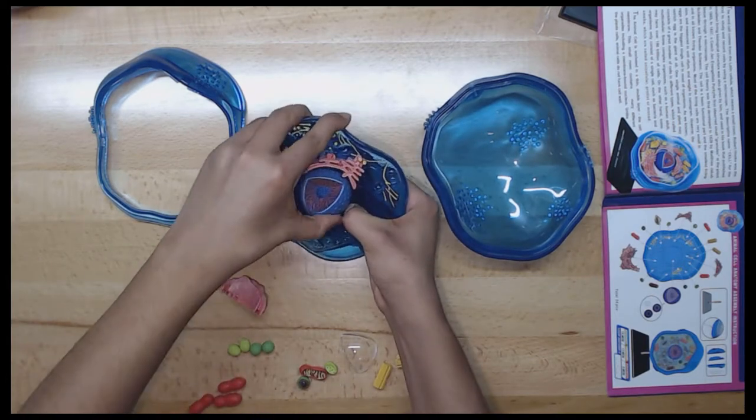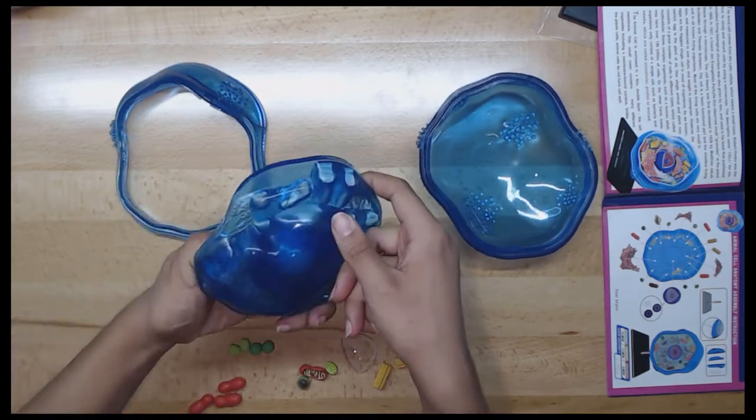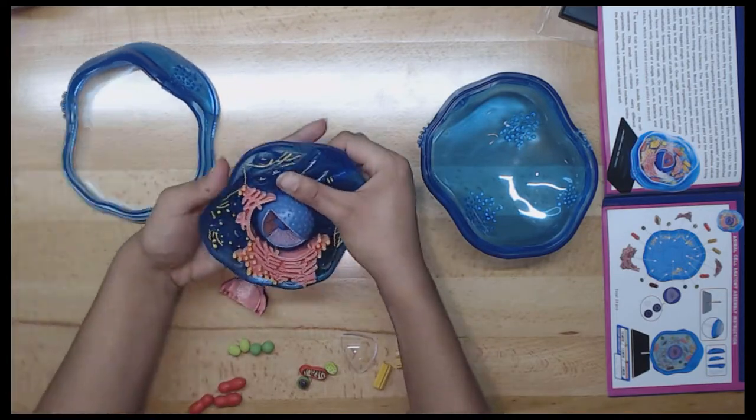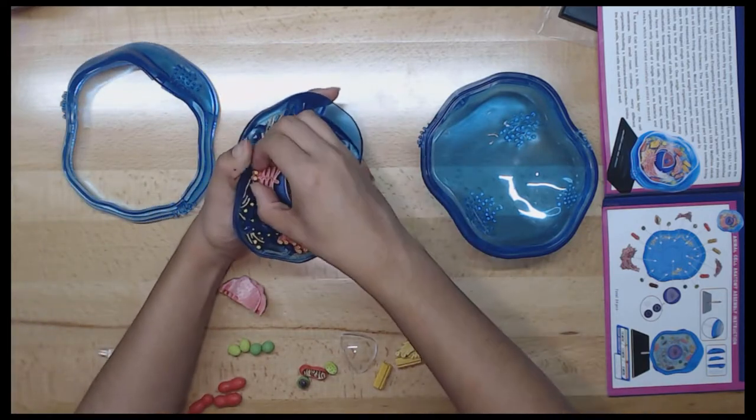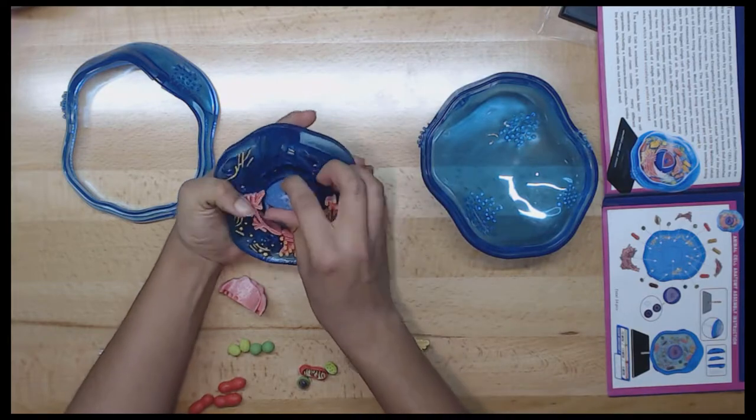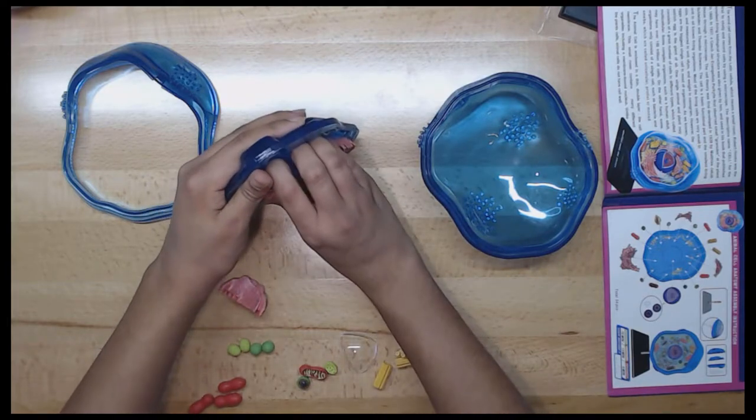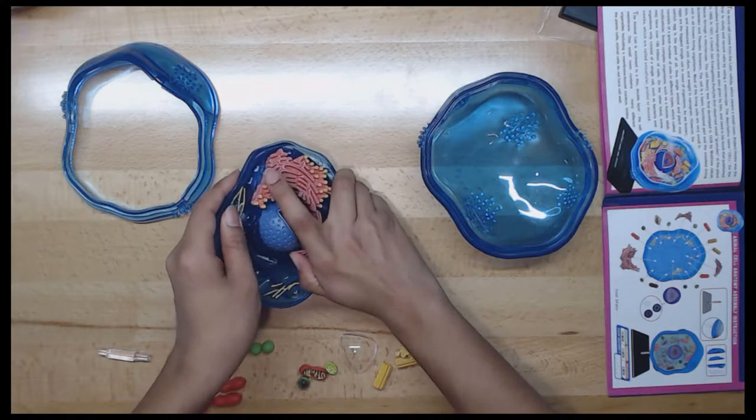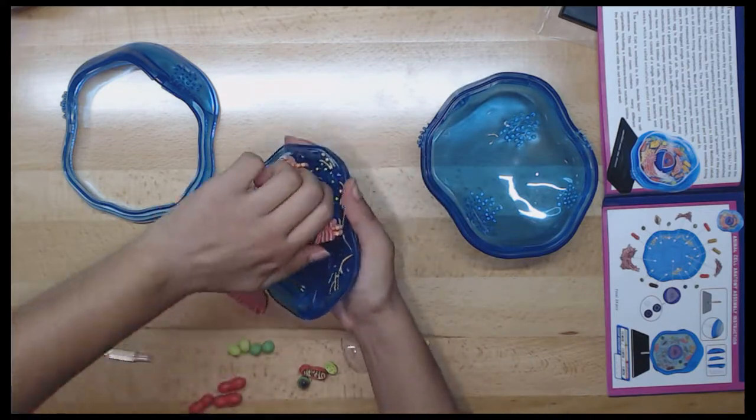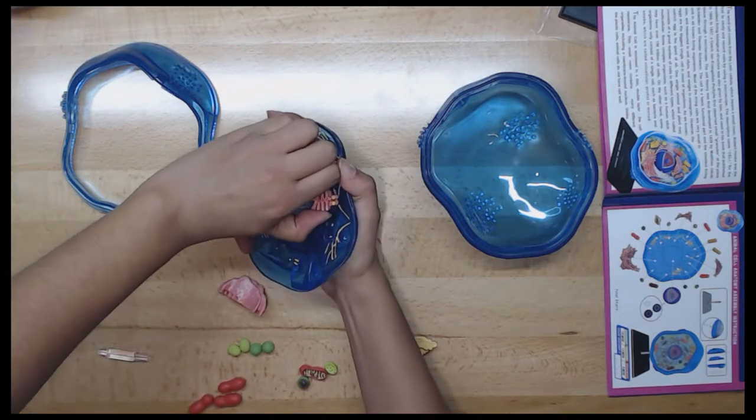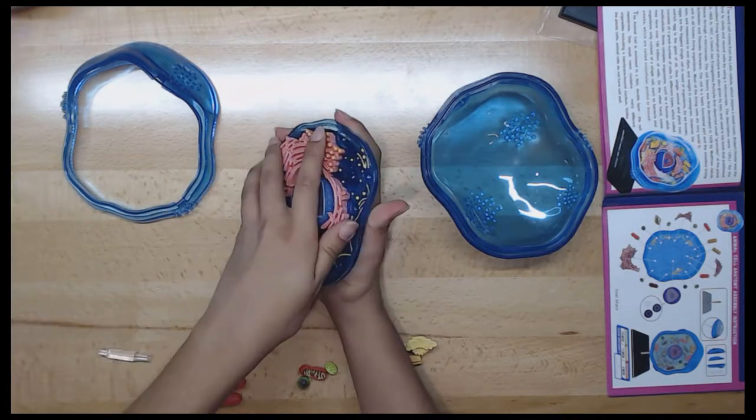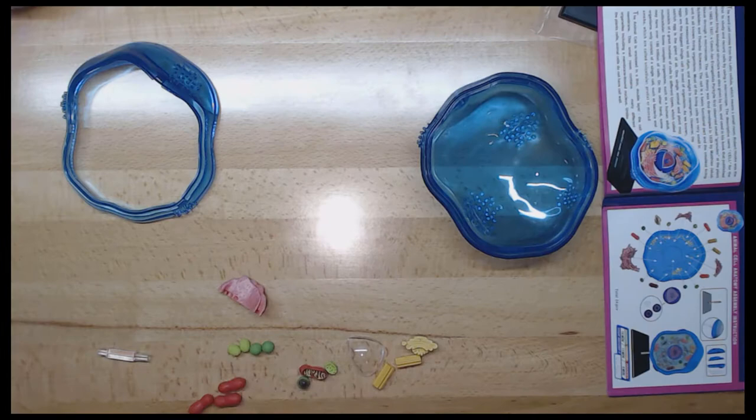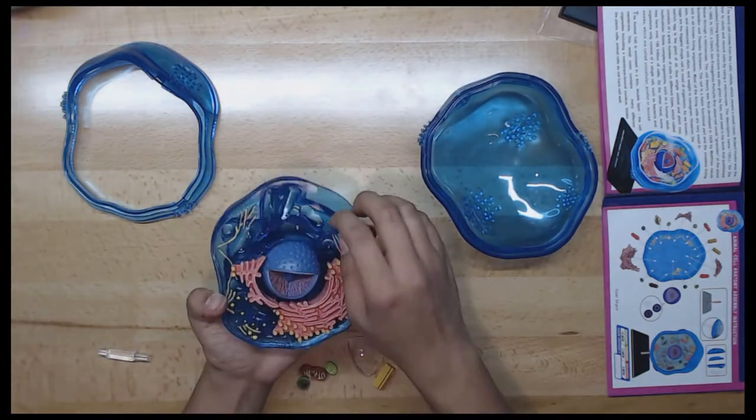Next is the Golgi complex. It is also called the Golgi apparatus, Golgi body, or dictyosomes. This important apparatus has the function to manufacture and package the macromolecules, such as proteins and lipids, that are synthesized by the cell. The Golgi complex plays as a part of the endomembrane system of eukaryotic cells, which regulates protein traffic and performs metabolic functions.